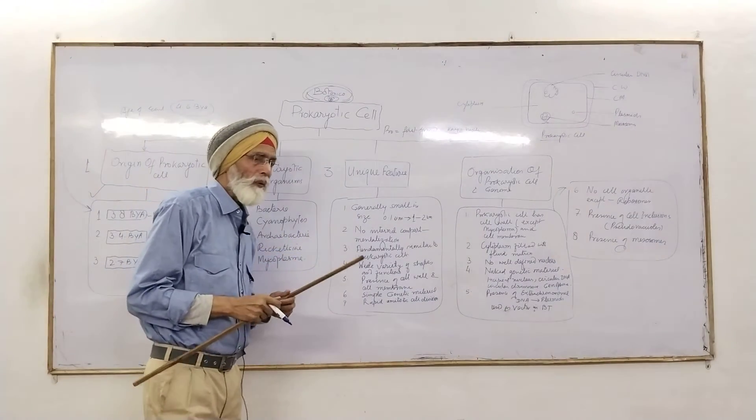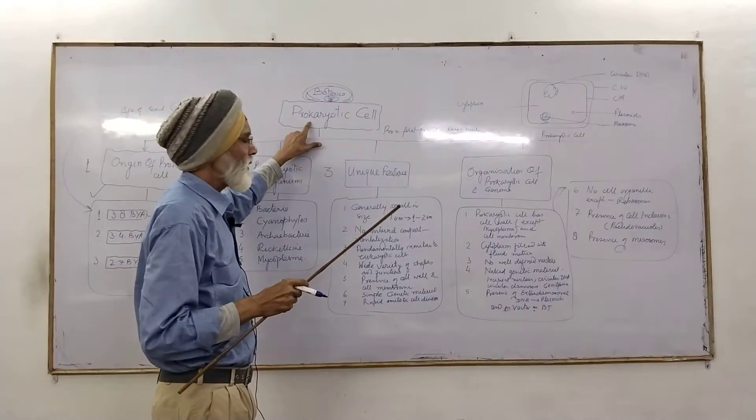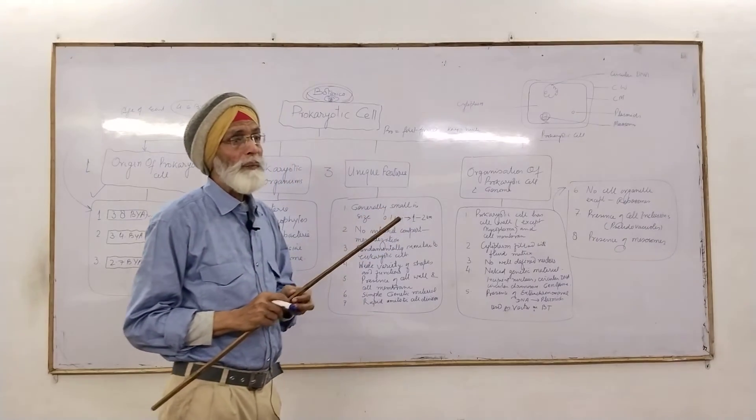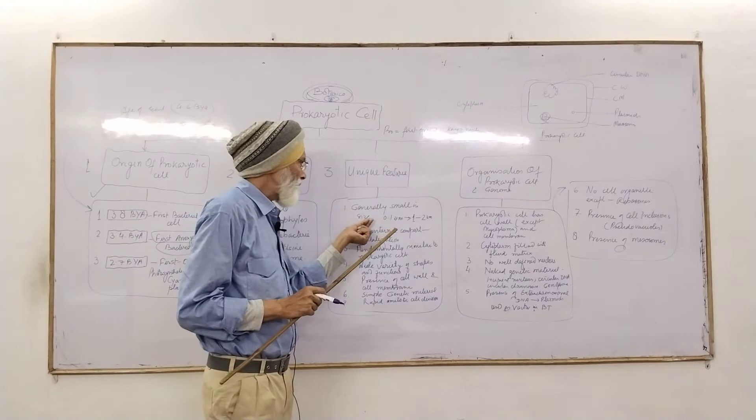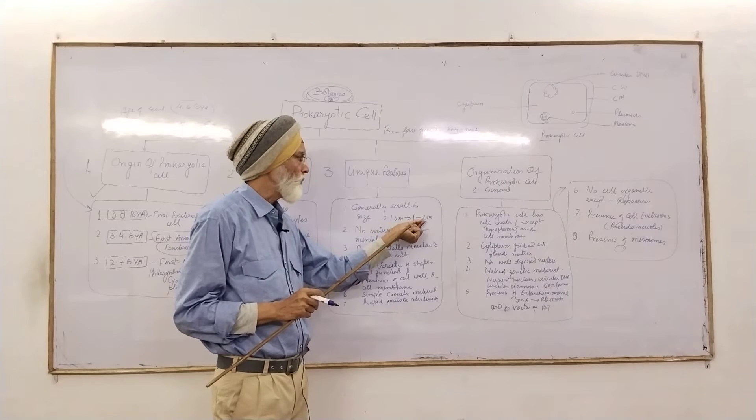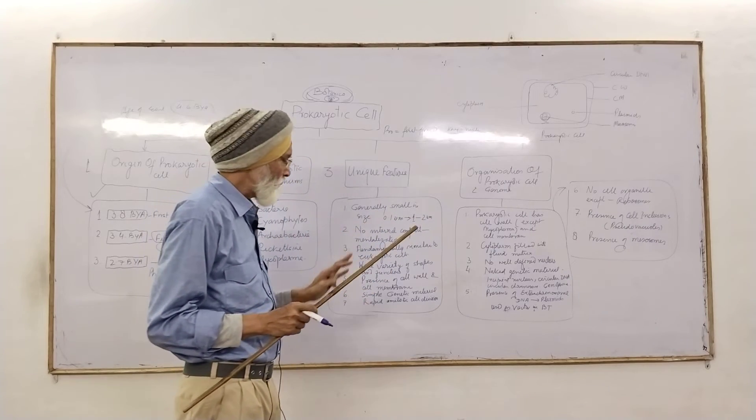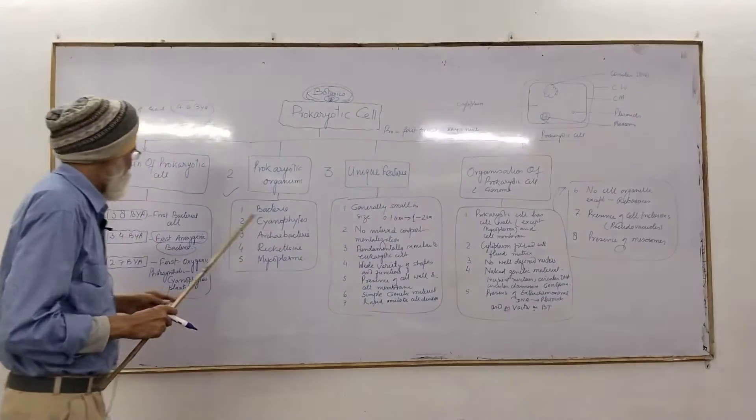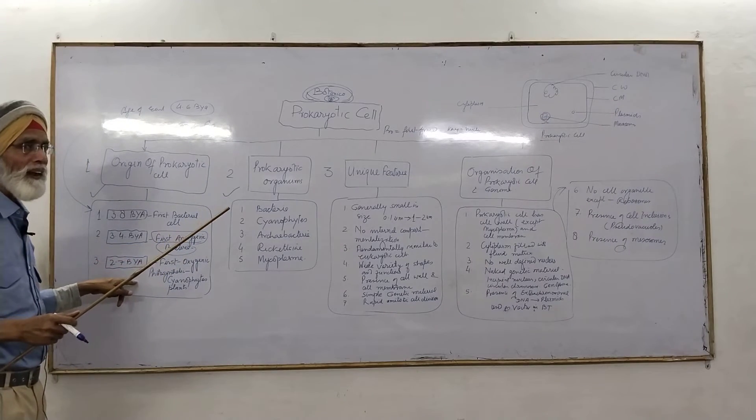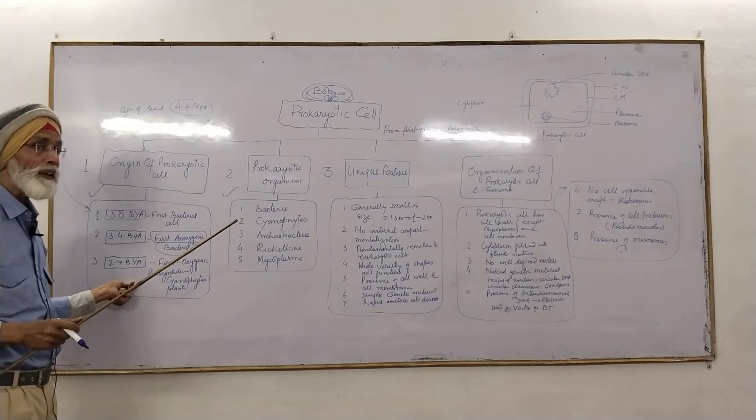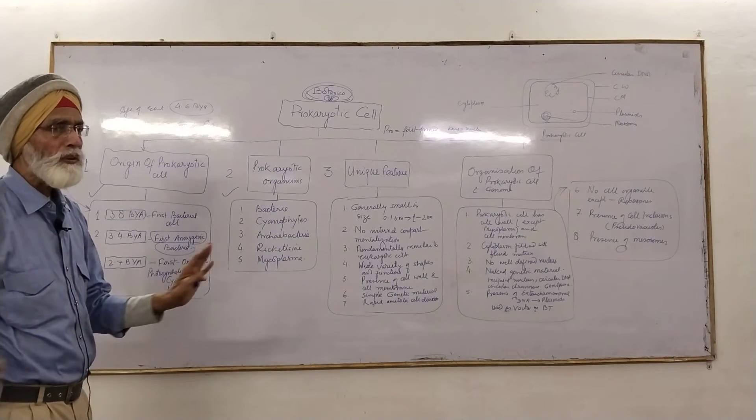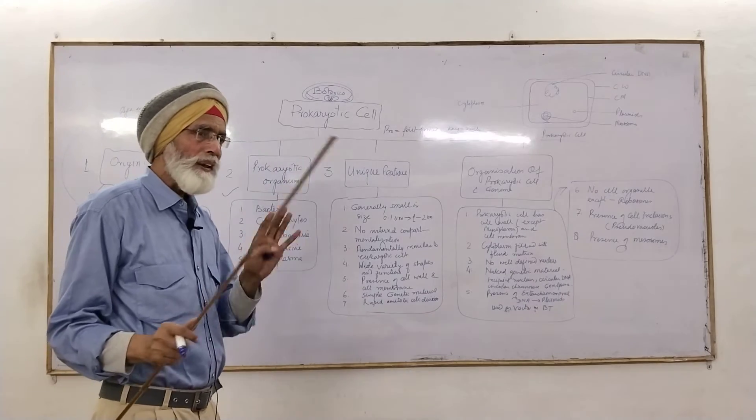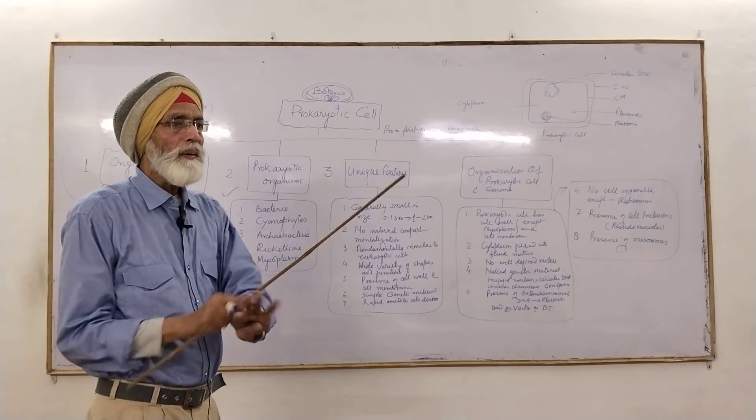Now you have known the origin of the prokaryotic cell and the examples of the prokaryotic cell. And the third one is unique features. What are the important unique features that make a prokaryotic cell for you? Having a very small size, they are not very big or macroscopic. Generally size 0.12 millimicron to 1.2, this is the very smaller size. In case of the cyanophyte, they came into existence after the first end of bacteria. They are having macroscopic structure, because they are visible to the naked eye, while bacteria are not visible to the naked eye.